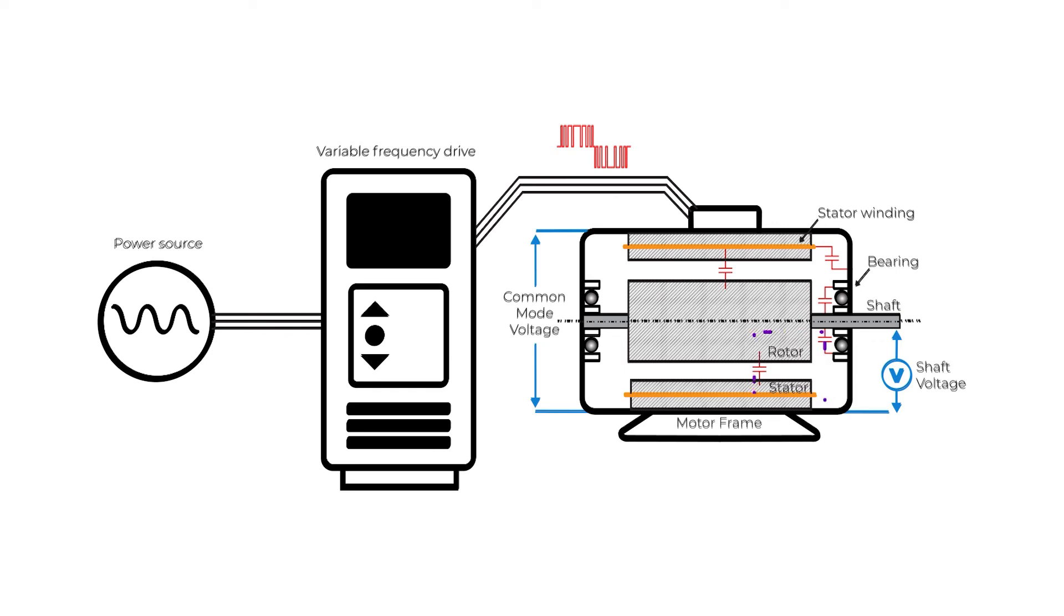DVDT of the common mode voltage in the stator windings generates pulse currents flowing to the rotor. Part of this current flows between the inner race and the outer race of the bearings, causing heat in the lubricant.